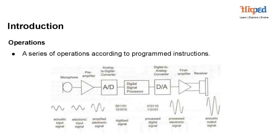In summary, the flow of signal processing begins with an analog input signal taken from a microphone, which gets converted into a digital signal by the ADC. The digital signal is then processed in the signal processing block, which outputs a digital signal that is converted back to an analog signal by the DAC. The amplified analog signal serves as the output, representing the final processed signal received by the receiver. This process allows us to manipulate and enhance signals for applications such as audio processing, communications, image processing, and more.